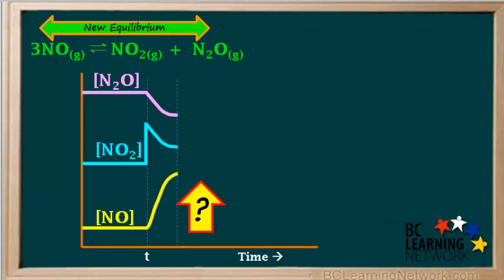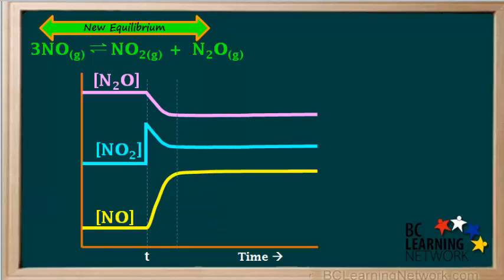What do you think will happen to the concentrations of these three gases as time proceeds past this point? Since the system has established a new equilibrium, the concentrations of the three gases remain constant as time proceeds.